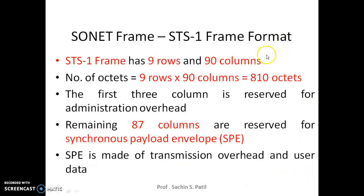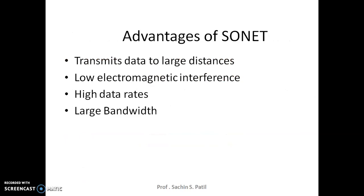This is the STS-1 frame format, which has 9 × 90 columns. The first 3 columns are reserved for administration overhead and the remaining 87 are for the synchronous payload envelope. SONET has low electromagnetic interference because the signal travels as light pulses, which are not affected by electric or magnetic fields, so electromagnetic immunity is very high.